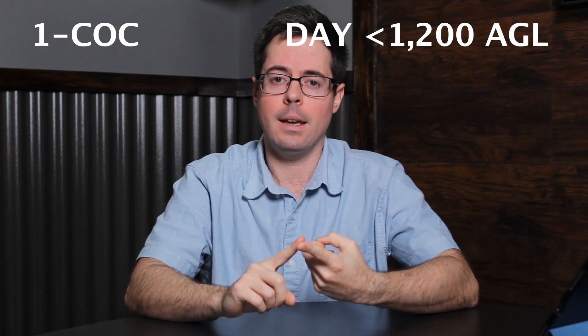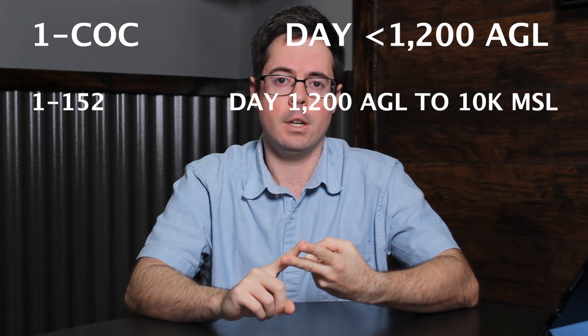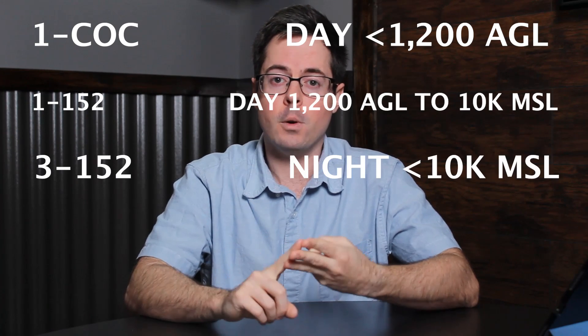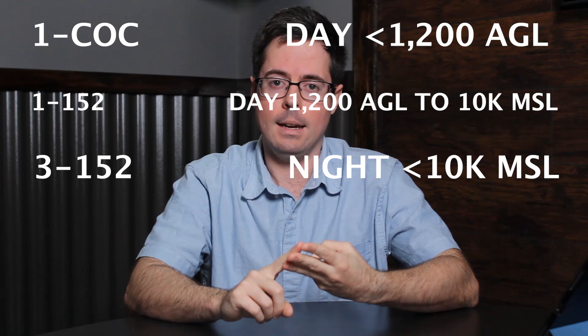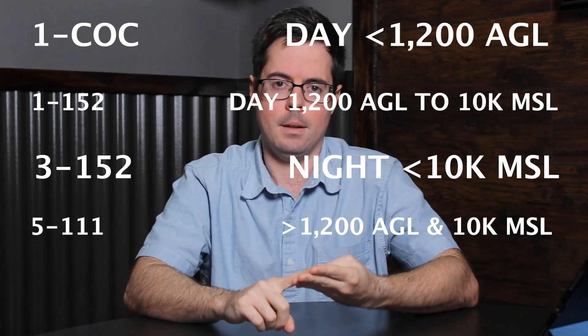Class G airspace has the most complex VFR weather minimums because we're operating at low and slow altitudes. There are basically four levels of VFR minimums in Class G airspace: 1 mile clear of clouds, which applies during the day below 1,200 AGL; 1-1-5-2, which applies between 1,200 AGL and 10,000 MSL during the day; 3-1-5-2, which applies below 10,000 MSL at night; and 5-1-1-1, which applies day or night above 1,200 AGL and above 10,000 MSL. In general, VFR minimums increase the higher you go because aircraft start traveling faster. VFR minimums at night are increased because it's harder to see. Class G minimums above 10,000 feet match that of Class E airspace because of the removal of the 250-knot speed limit.